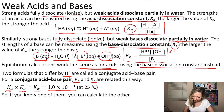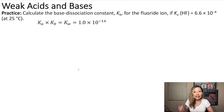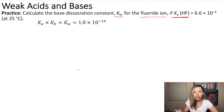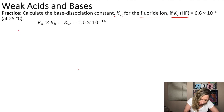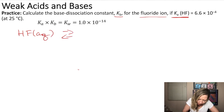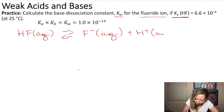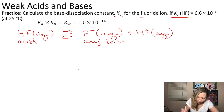Let's do a sample question. Let's calculate the base dissociation constant K sub B for the fluoride ion, given that K sub A for HF, or hydrofluoric acid, is 6.6 times 10 to the negative fourth at 25 degrees Celsius. First, let's write out the chemical equation: our acid is HF (aqueous), and it produces a conjugate base F minus plus H plus ions. So HF is our acid and the fluoride ion F minus is the conjugate base.